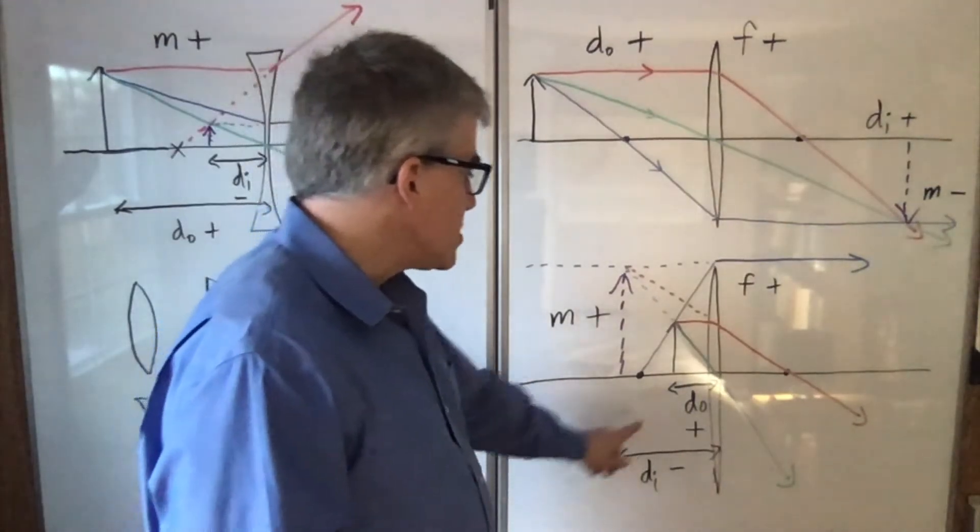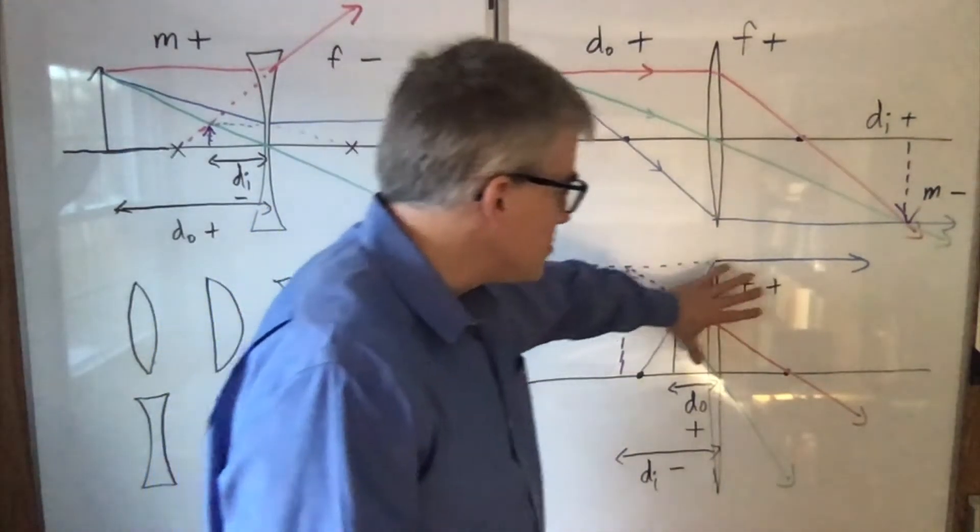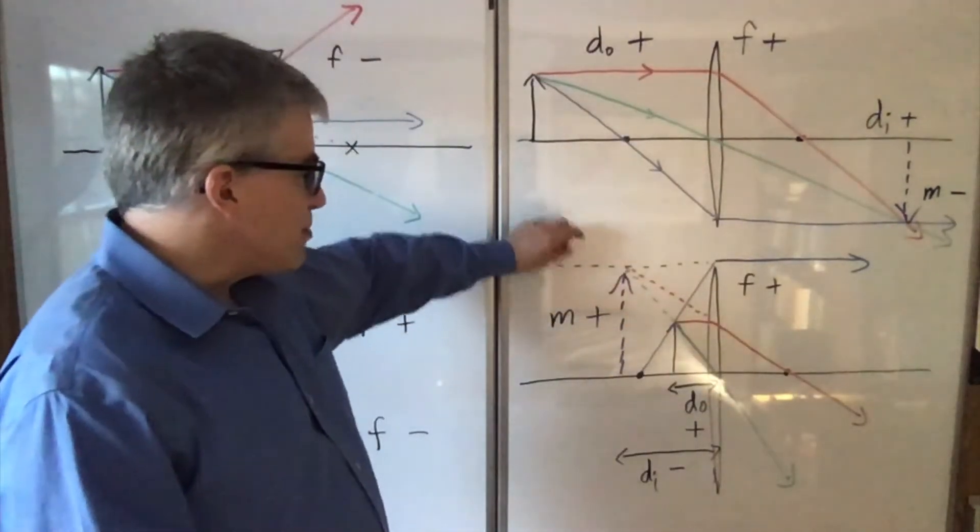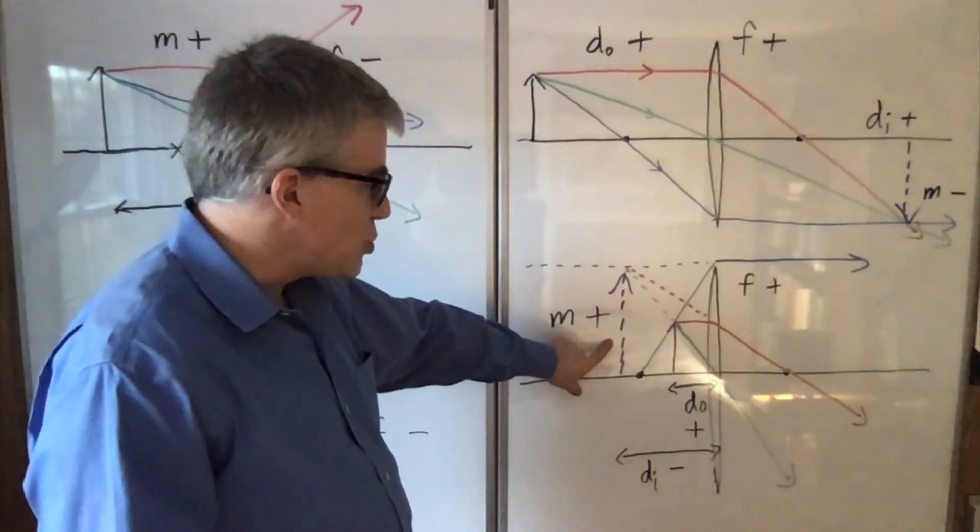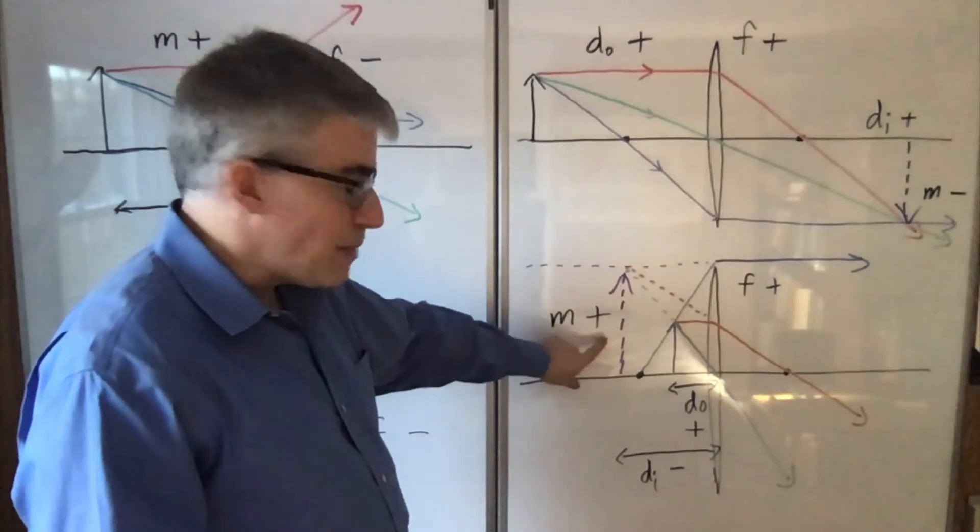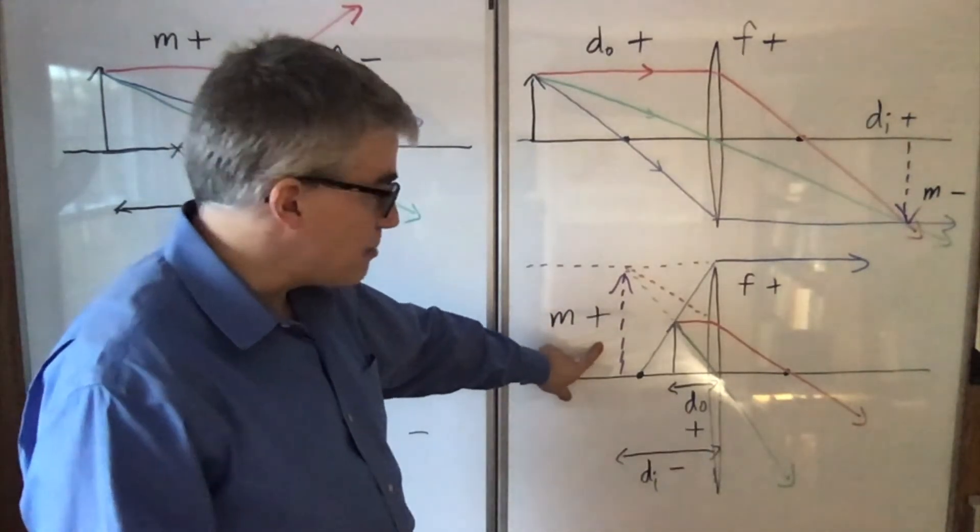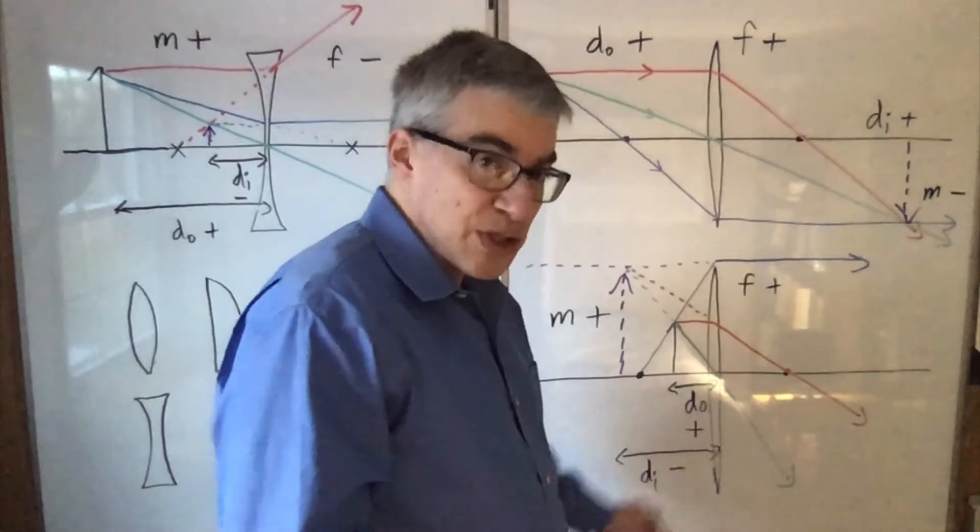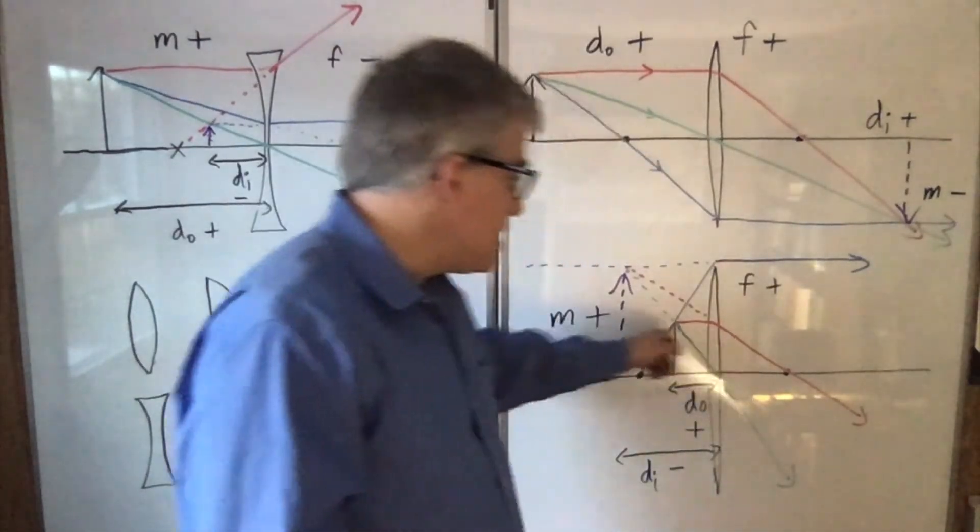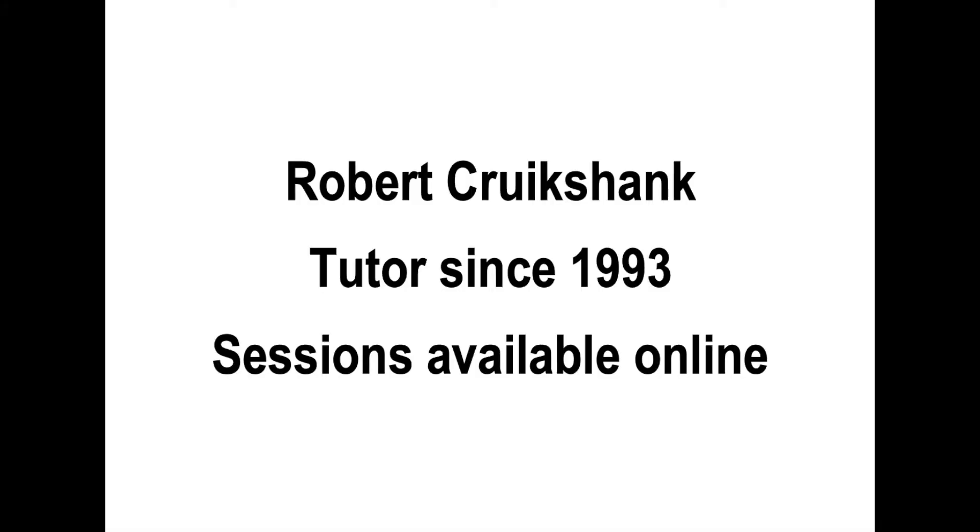If the object is too close, though, the beams are not able to bend all the way together, and so you have to backtrack, and you get a virtual image that's upright and enlarged. Magnification is positive because it's right side up. DO is positive, as usual. DI is negative because it's on this side.